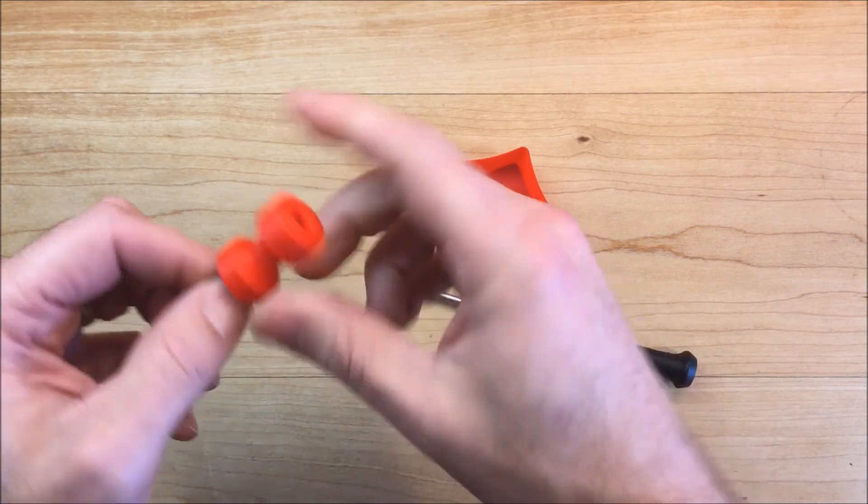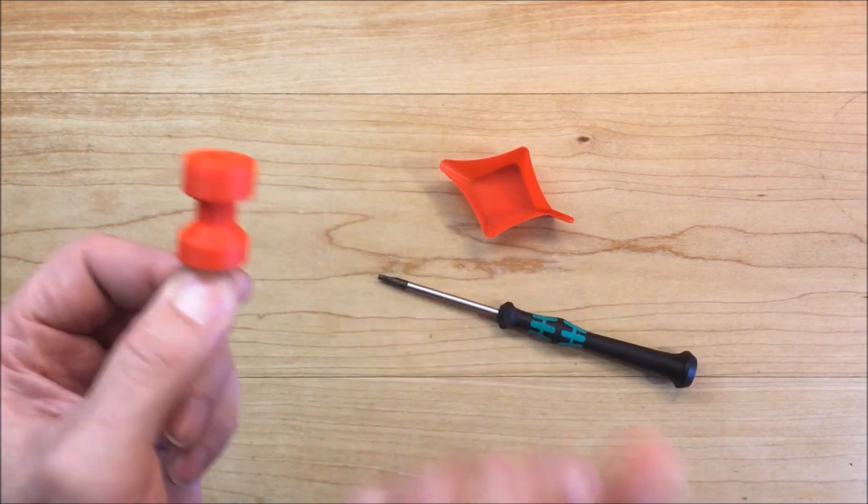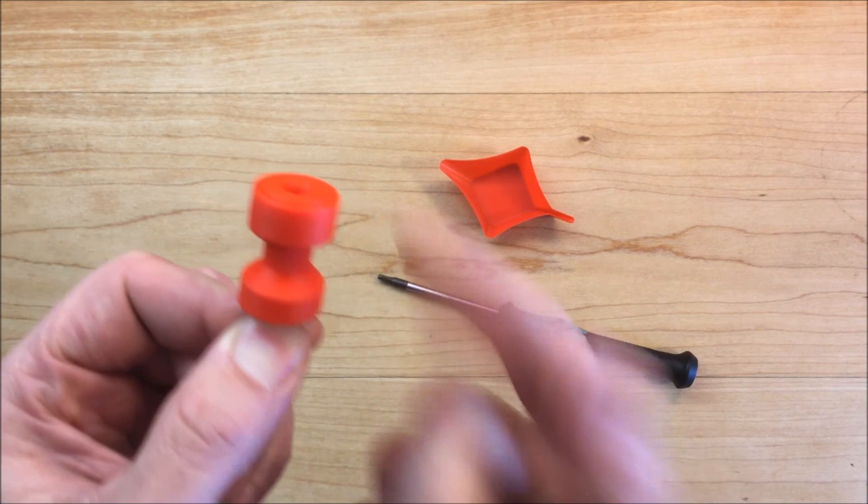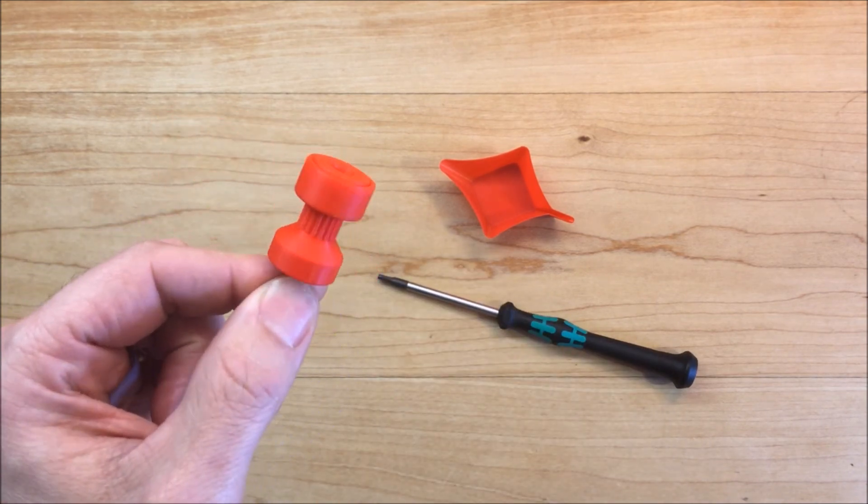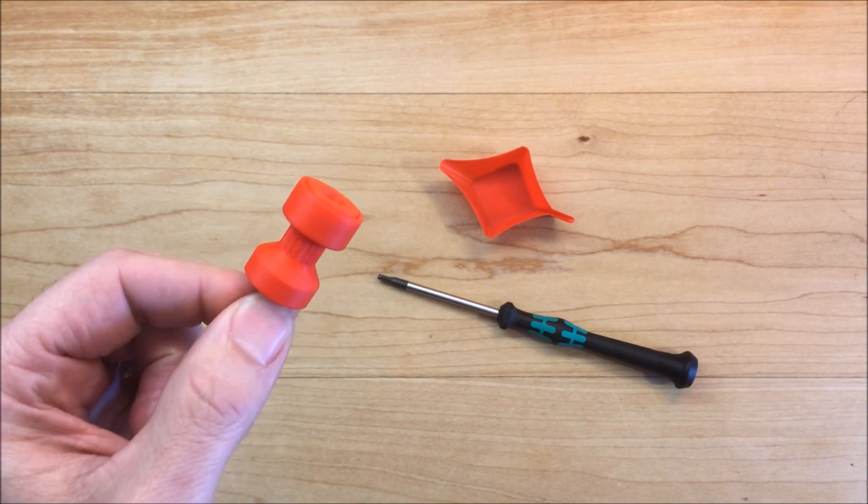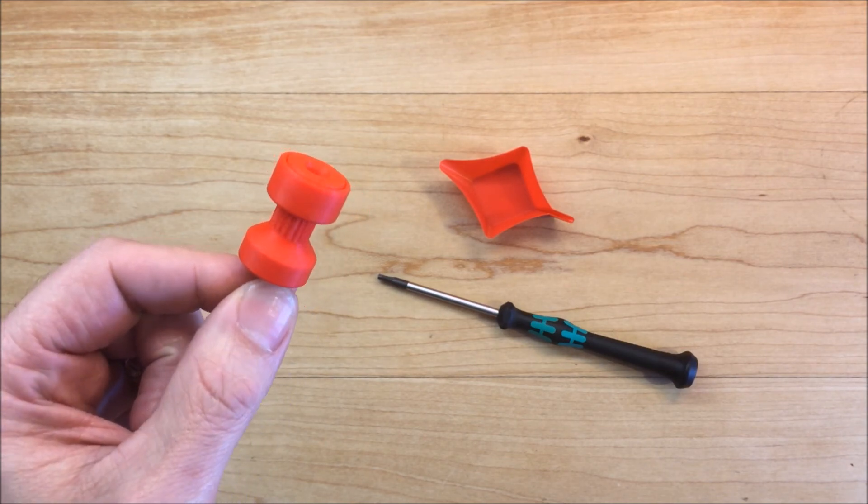So you got that tight. It should spin freely. Before I use this I'll use some Super Lube, which is some PTFE grease, but you could also use lithium grease as well.